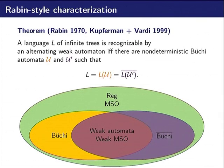This is the theorem we were interested in extending, the theorem from Rabin, Kupferman, and Vardi, which says that it is equivalent for a language to be both Büchi definable and that the complement is Büchi definable, and to be definable by a weak alternating automata or equivalently by the weak monadic second-order logic.